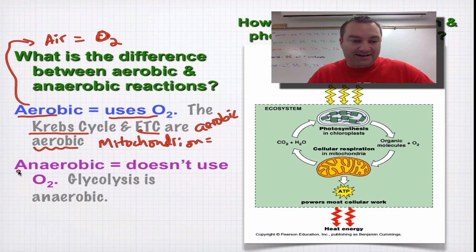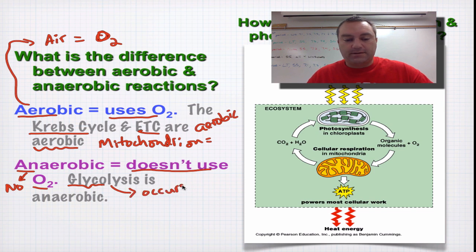If you put AN in front of aerobic, that means NO. So this would mean NO oxygen. So out of your three steps, glycolysis, and remember glycolysis occurs in the cytoplasm,